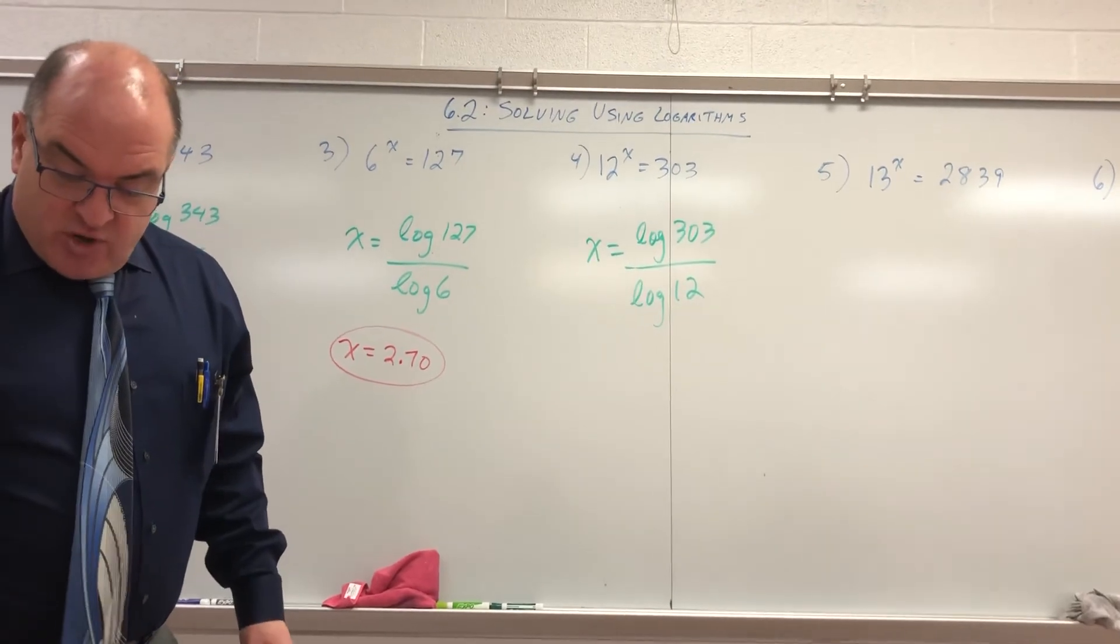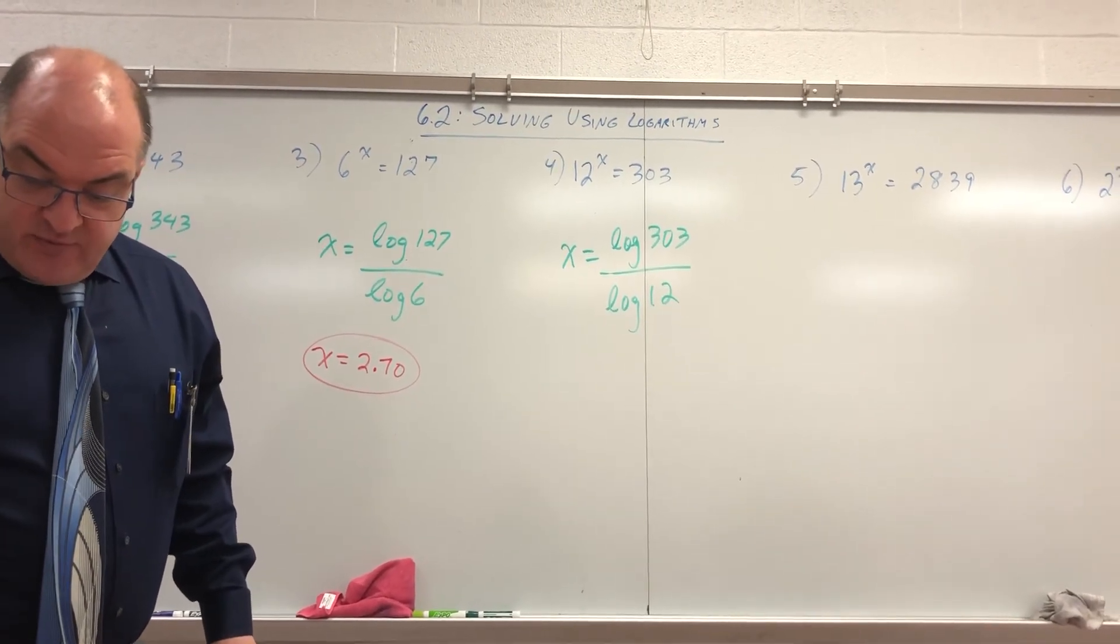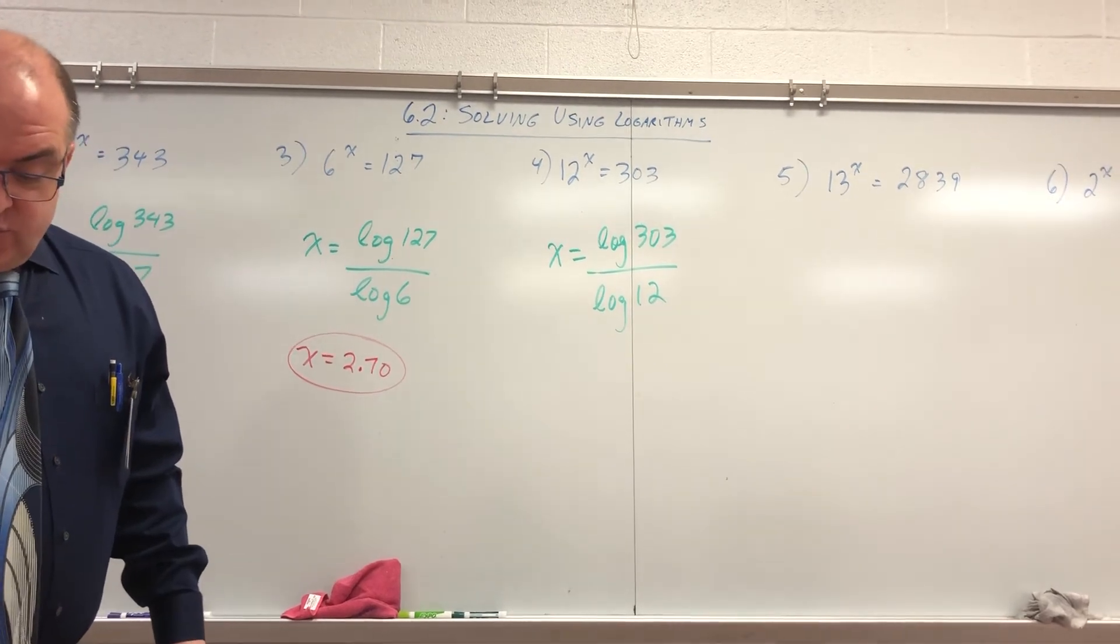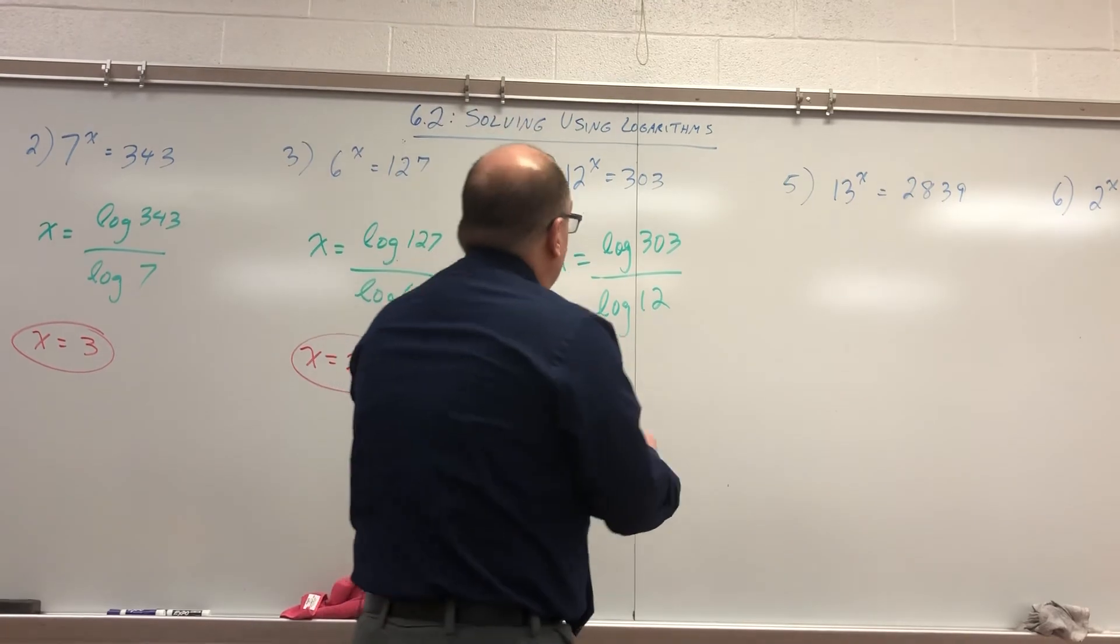log 303 divided by log 12 equals 2.299, 2.30 if you round.